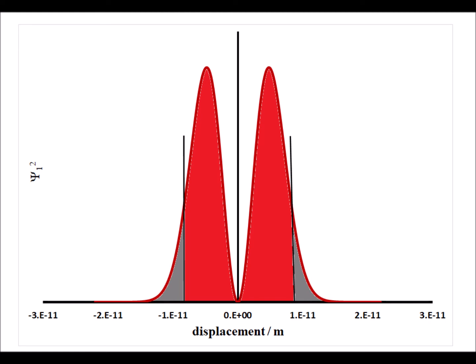Here are the probabilities for the n equals one state. The area shown in gray is the forbidden probability, and the allowed probability classically is shown highlighted in red.